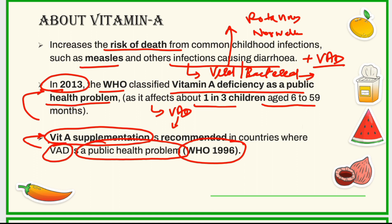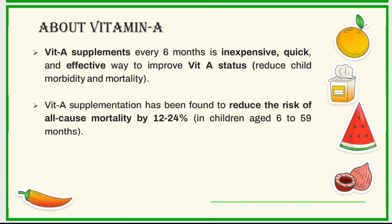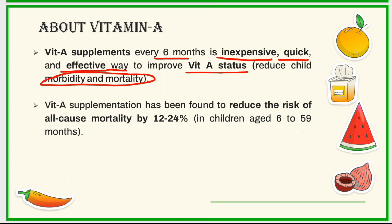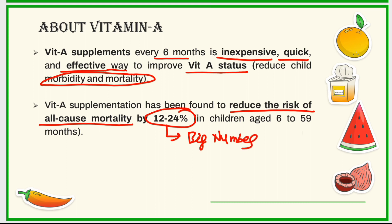In such a condition, vitamin A supplementation is recommended. WHO recommended it because, when vitamin A is supplemented every six months, it is one of the inexpensive, quick, and very effective ways to improve the vitamin A status of children and ultimately reduce childhood mortality and morbidity. It was also found that vitamin A supplementation has the ability to reduce the risk of all-cause mortality by 12 to 24 percent — a very significant number — among children of the age group 6 to 59 months.